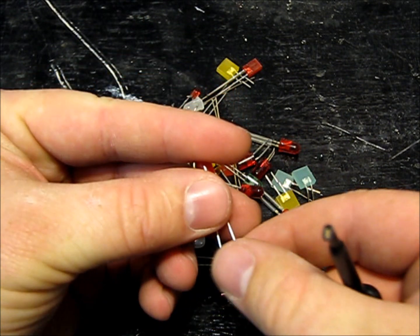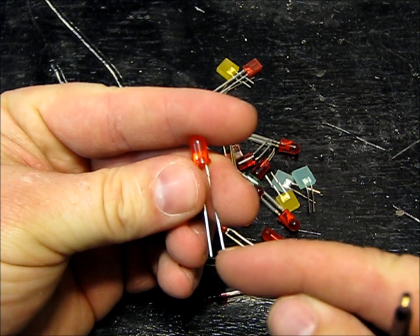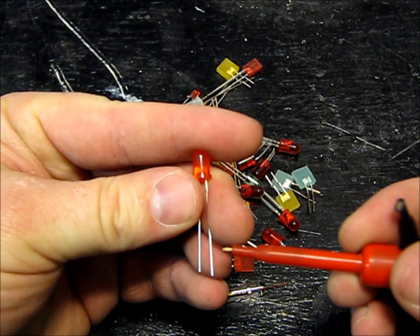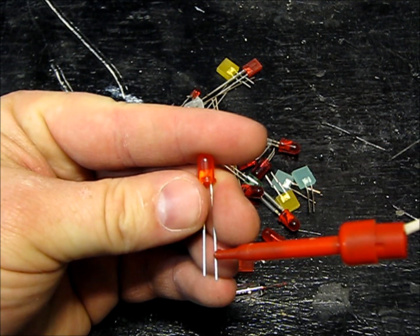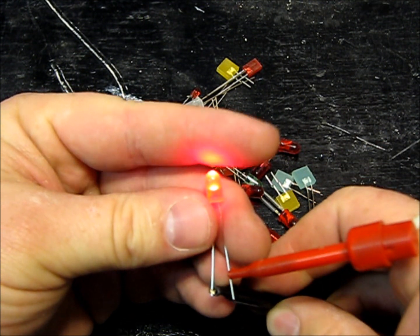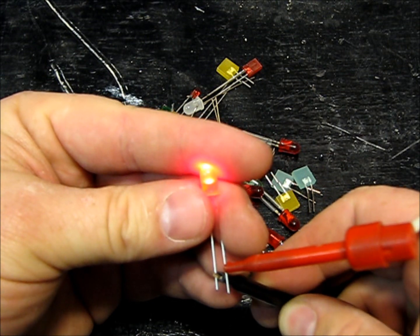So generally an LED is going to have one pin be longer, and that pin is the anode, which is positive. The short one is the cathode, which is negative.